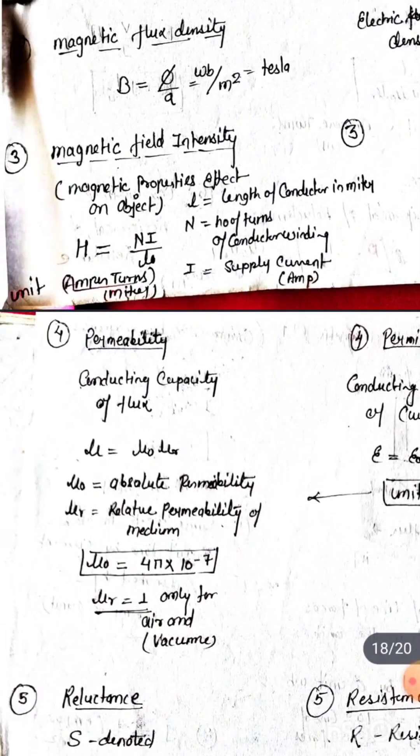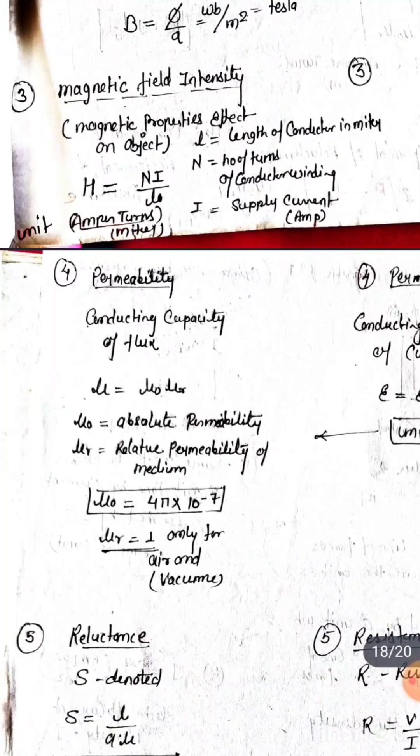Permeability mu equals mu naught times mu r, where mu naught is absolute permeability and mu r is relative permeability, which changes according to medium. In air and vacuum, mu r equals one, and in copper and other media the value changes.